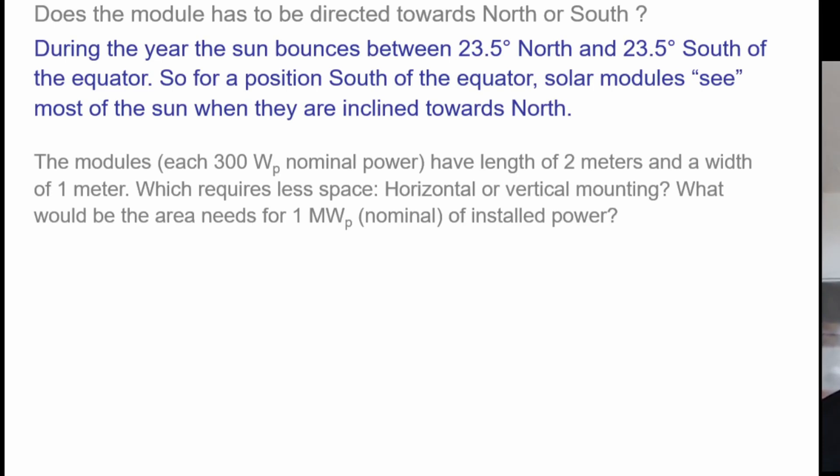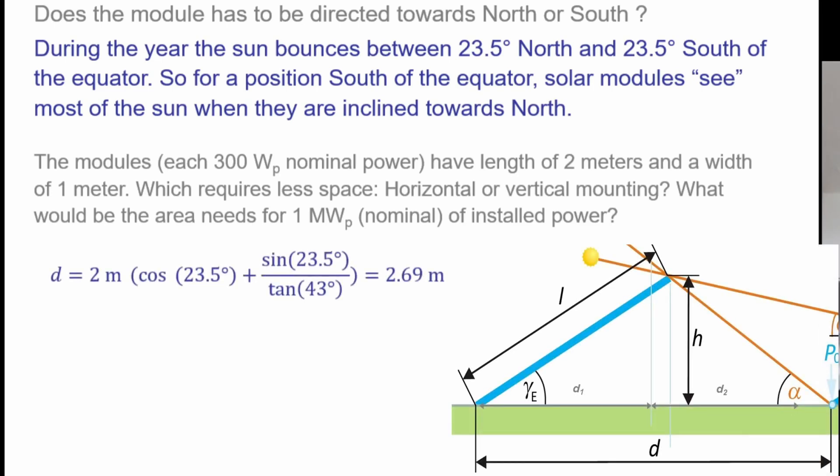Second part of the question, horizontal or vertical mounting. If we calculate it, we just calculate it first. We calculate it horizontally. Then this length at the cross section has been 1 meter. If we now mount it vertically, our length at the cross section is 2 meters.